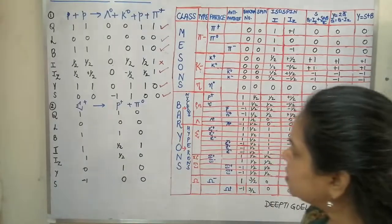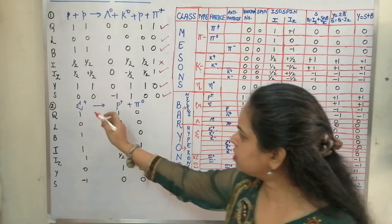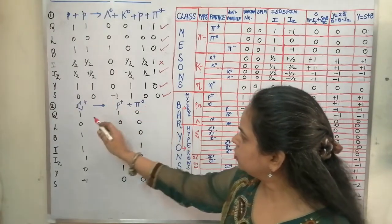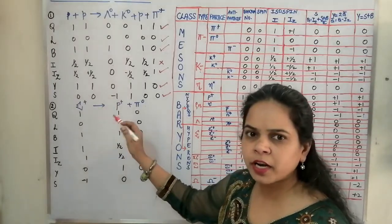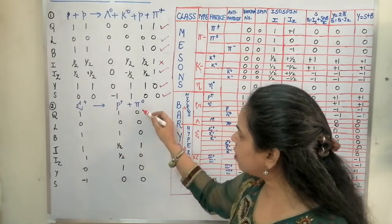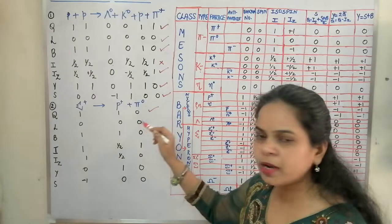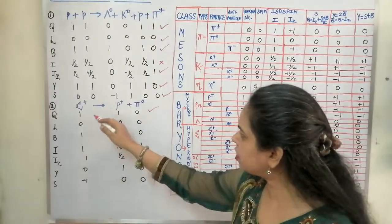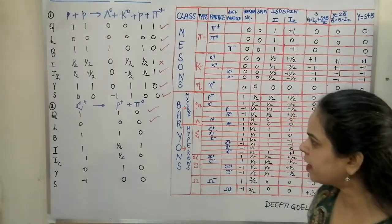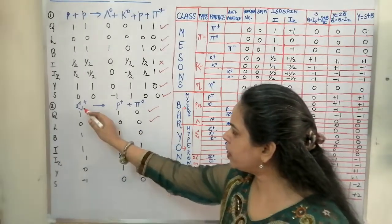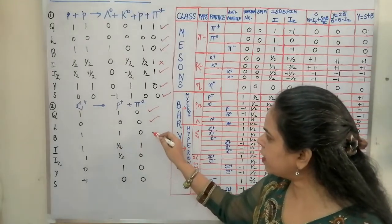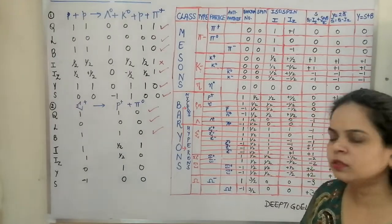For the second reaction, sigma positive decays into proton and pi naught. For charge: sigma positive has charge +1, proton has charge +1, and pi naught is 0 — charge is balanced. Lepton number: no leptons are present, so lepton number is 0 — conserved. Baryon number: sigma positive has baryon number 1, proton has baryon number 1, and pi naught is 0 — baryon number is conserved.